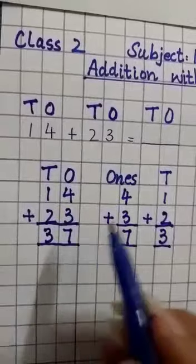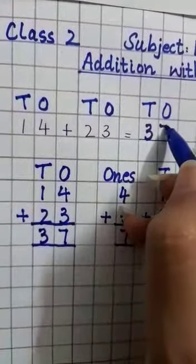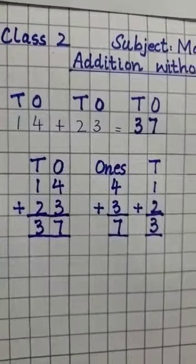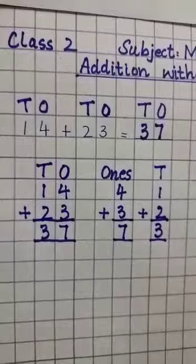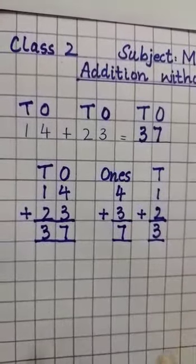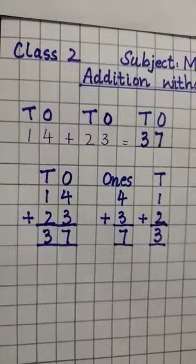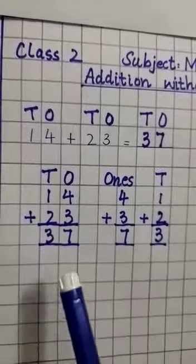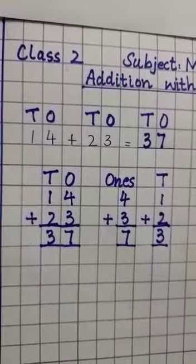37. Write this answer on the top: 37. One very important thing, girls: in these horizontal sums we will not do place value break, break the number, and abacus. After finishing one sum, you have to leave one line and draw a full finishing line.